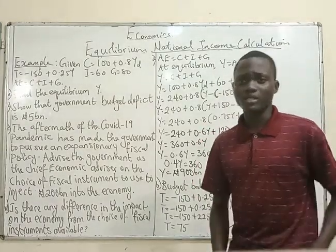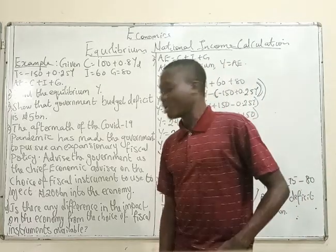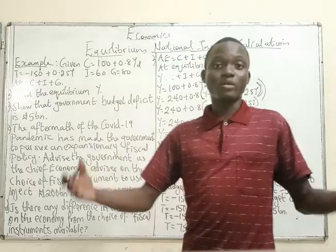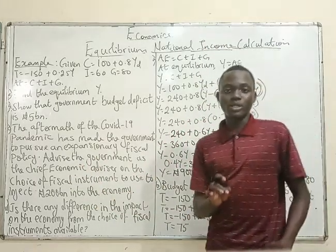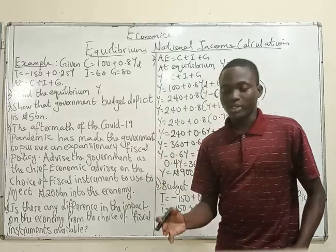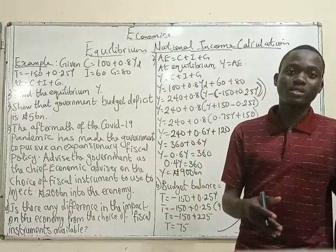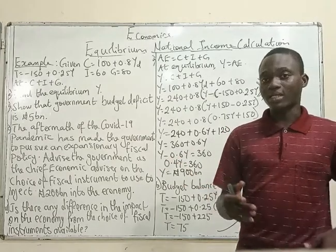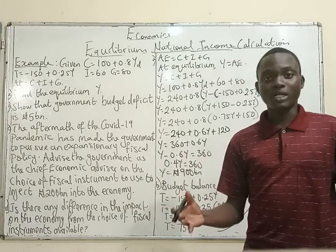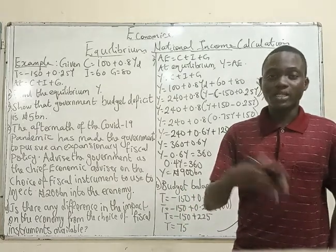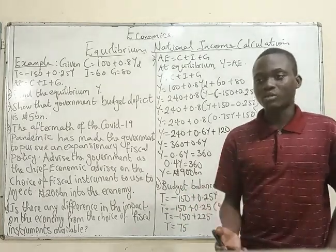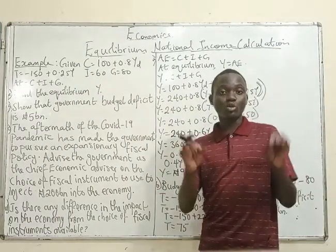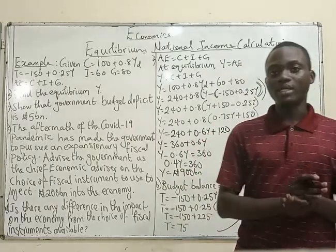What is fiscal policy and what are the fiscal instruments? Fiscal policy is the policy the government uses to stabilize or regulate the economy. The government does this in two ways: it can alter its government spending, or it can change the tax component depending on the economic objective. So the two basic fiscal instruments are government spending and taxes.